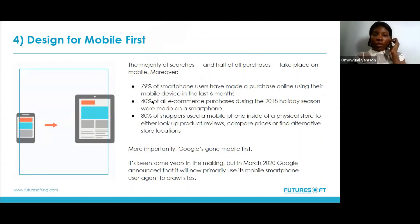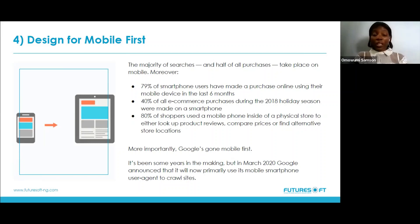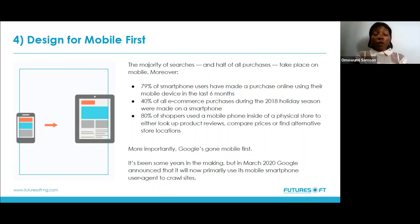The next method is to design for mobile first. It's very important to know that a lot of people visit websites with their mobile phone rather than a desktop. The majority of searches and half of all purchases take place on mobile. 79% of smartphone users have made an online purchase using their mobile device in the last six months. Also, 80% of shoppers use a mobile phone inside a physical store to look up product reviews, compare prices, or find alternative store locations.